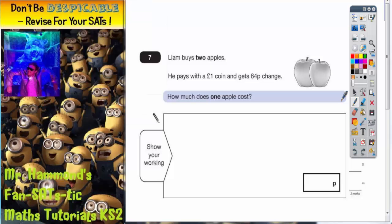Question 7. Liam buys two apples which you can see right there. He pays with one pound coin and gets 64 pence change. How much does one apple cost?